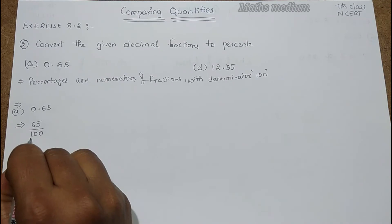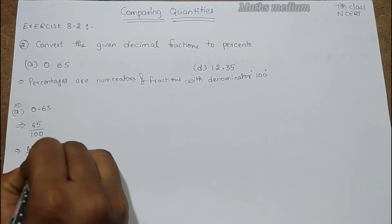But in this case we have already 100 in the denominator. So there is no need to make 100 in a denominator. So let's write it as 65 by 1 into 1 by 100.